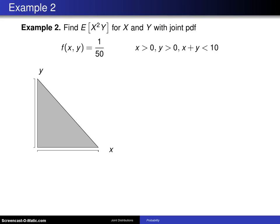In this example, we'll find the expected value of a function of two random variables for continuous random variables x and y. Find the expected value of x squared y for x and y with joint probability density function f of x, y equals 1/50 over the region x greater than 0, y greater than 0, x plus y less than 10. You can look at this support and realize that these are continuous random variables, and that's why this is called a joint probability density function.